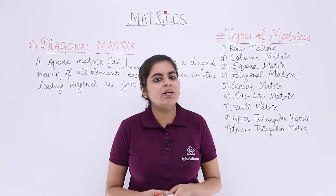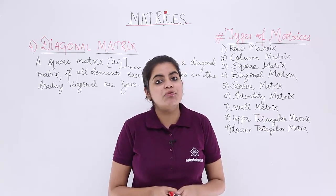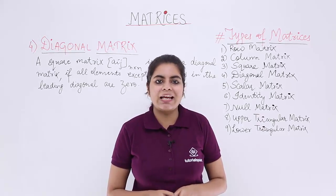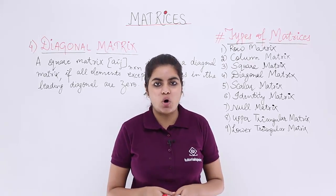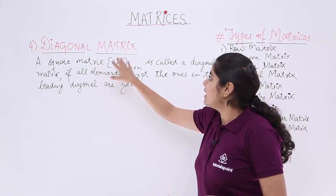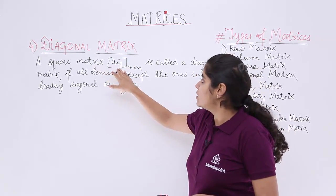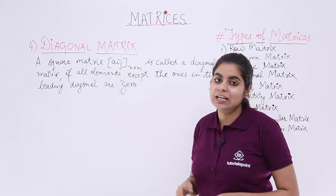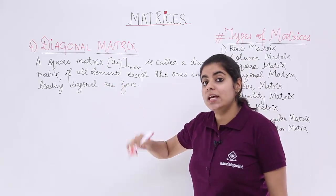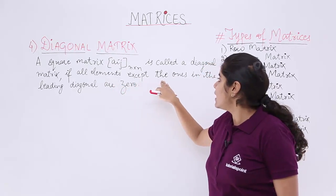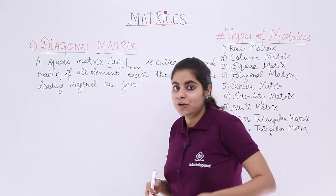Now let's see the definition of diagonal matrix. I have already told you in the square matrix what is meant by the principal diagonal or the leading diagonal. That knowledge will be helpful in this video. A square matrix aij of order n by n is called a diagonal matrix if all elements except the ones in the leading diagonal are 0.